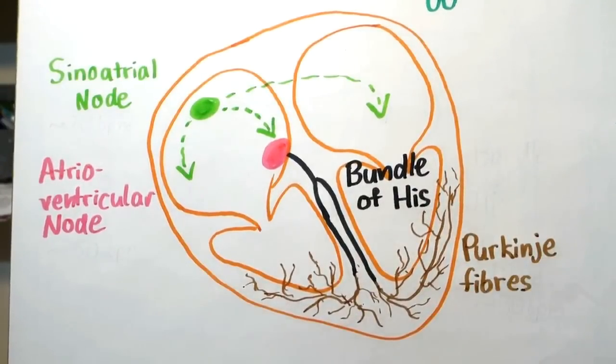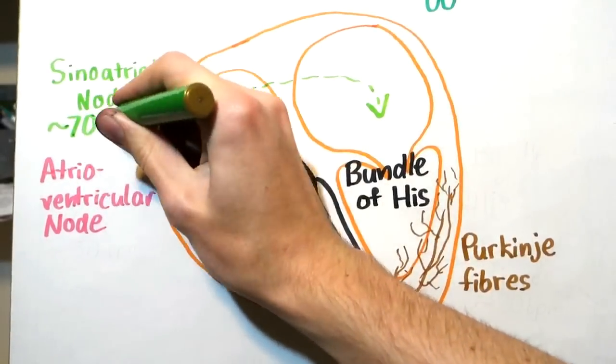There is a delay in the signal traveling from the AV node to the Purkinje fibers of about 150 milliseconds, which serves to contract the ventricles slightly after the atria. This maximizes blood flow through the heart. The SA node passively generates signals at a normal rate of about 70 beats per minute.